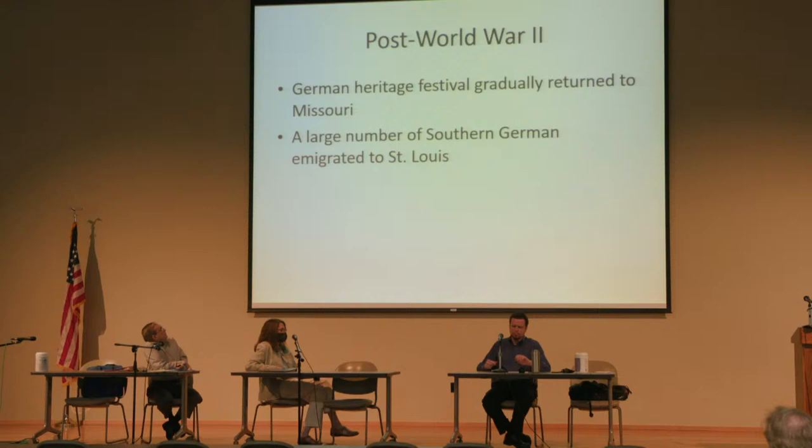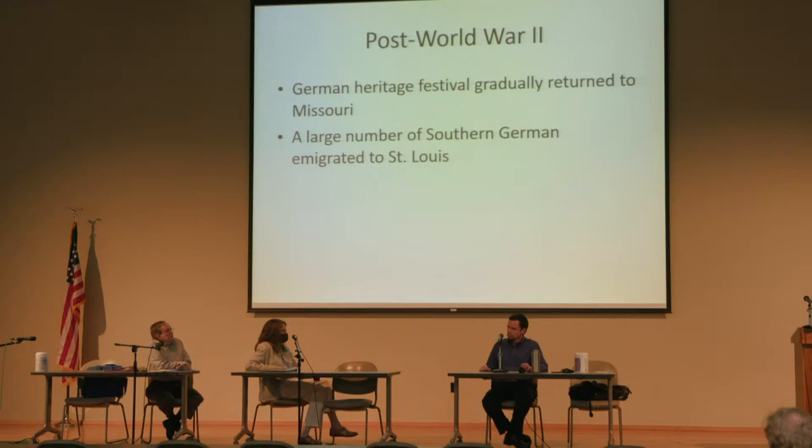After the war, German immigration continued, particularly many of what were called Donau Schwaben — Germans whose families had in the 15th and 16th centuries moved into the Austro-Hungarian Empire, and who were now fleeing Romania and Hungary as those countries were being taken over by communists. They moved into South St. Louis.